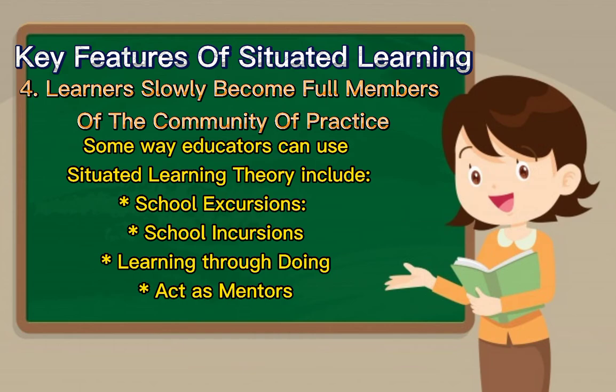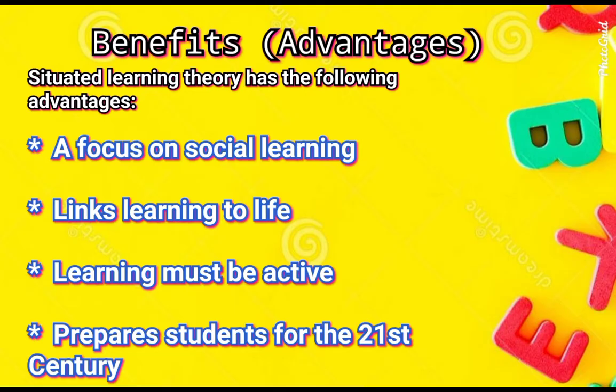Third, learning through doing — focus on project-based or phenomenon-based learning, where students learn by doing real-world problem-solving tasks rather than learning from books. Fourth, act as a mentor — educators can take on mentorship roles in which students become apprenticed in their practice. For example, students come along to attend adult meetings and listen to how the meetings are conducted and decisions are made. Here, the students become legitimate peripheral participants.